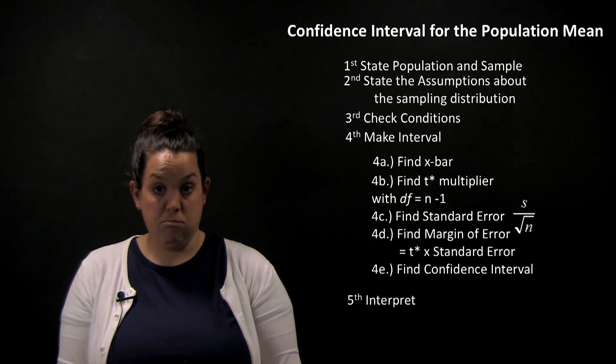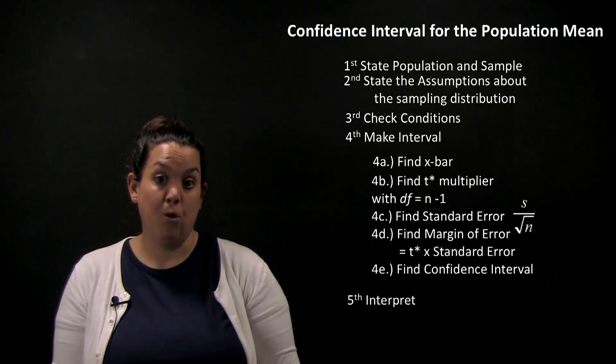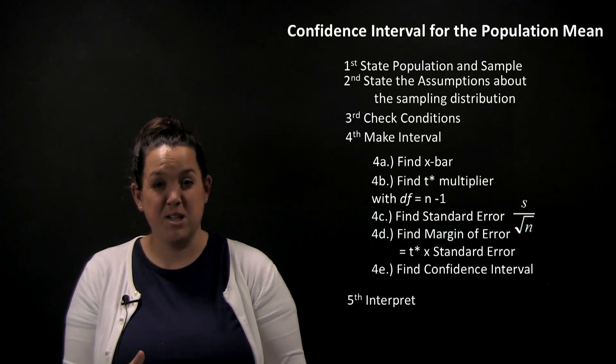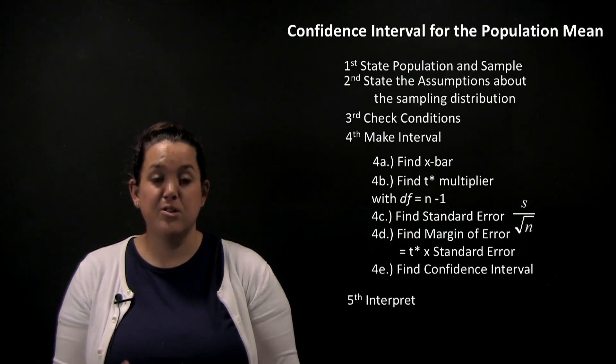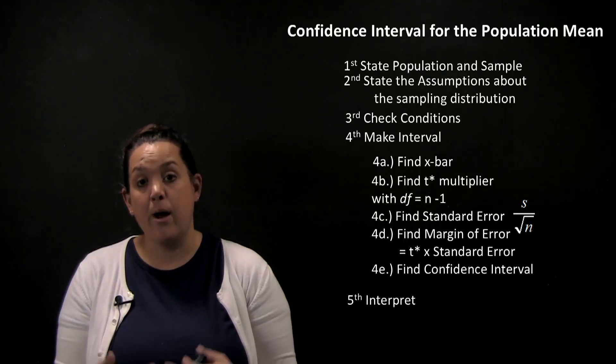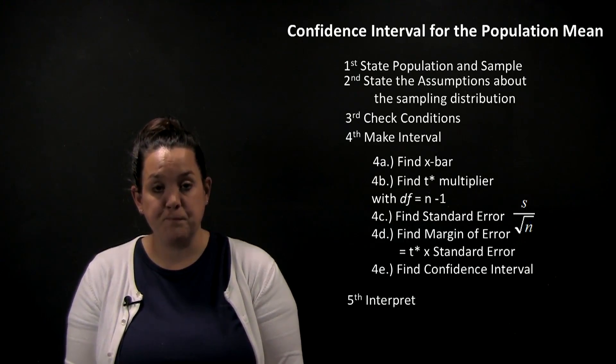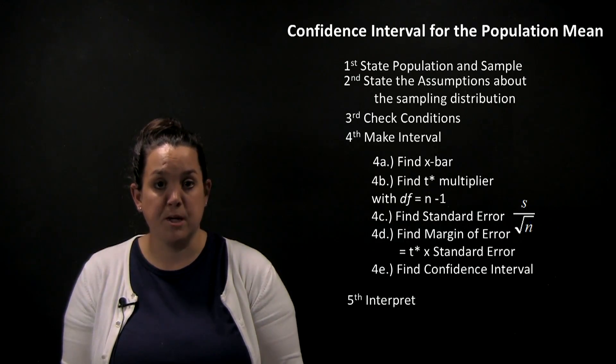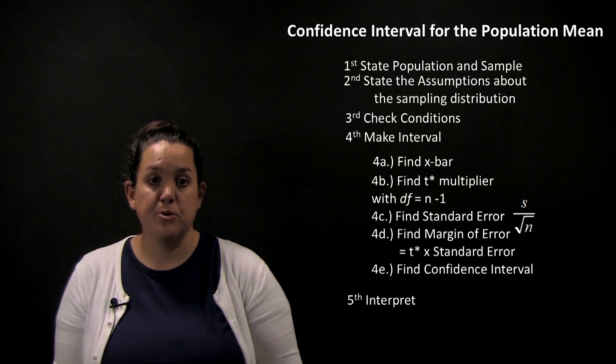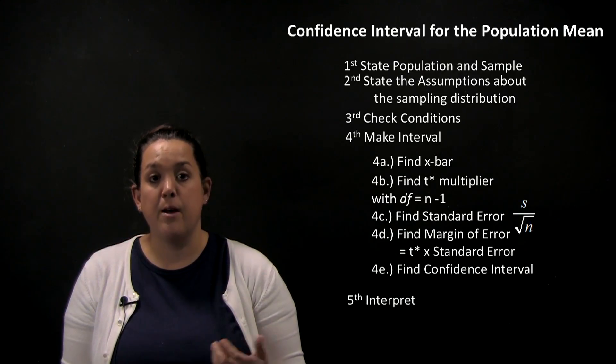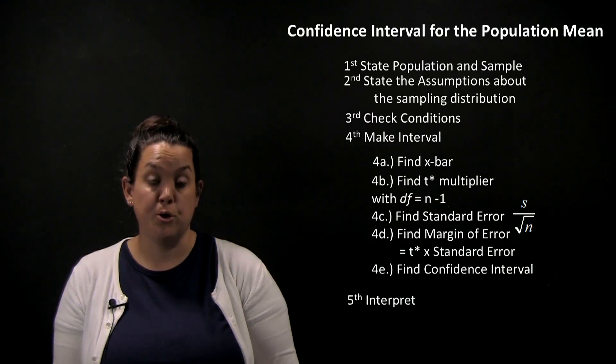So we want big sample sizes, and we don't want outliers. We'll use different conditions based on if there are outliers or extreme outliers and how big the sample size is. The purpose of that step three is for you to be able to essentially verify that the assumptions from step two are true.